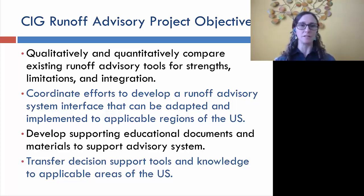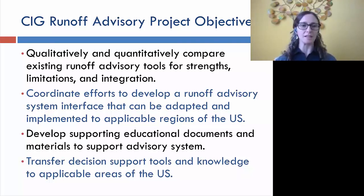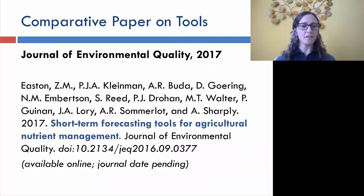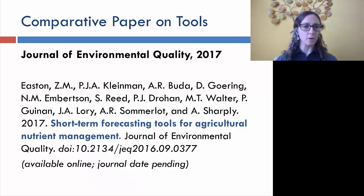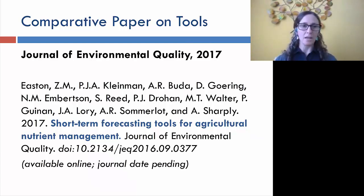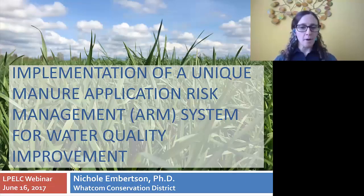If these advisory tools aren't in your area already and you're interested, feel free to reach out so we can keep you on the list. For more on the tools presented today, we put together a comparative paper where Easton was our primary author, published in the Journal of Environmental Quality recently — you can get the online version now, with the journal date pending in a special issue.